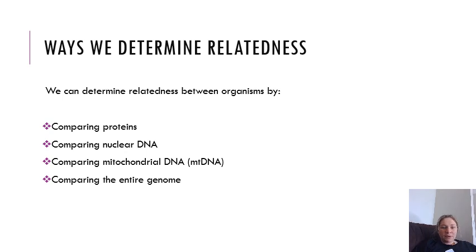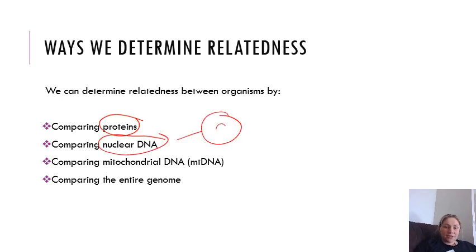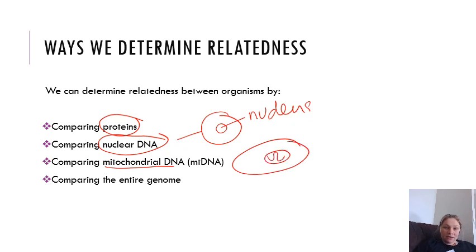There are a few ways that we can determine relatedness. We can compare proteins, we can compare nuclear DNA — DNA found inside the nucleus of our cells — we can compare mitochondrial DNA, which is DNA found inside our mitochondria, or we can compare the entire genome. A genome describes all of the genes present in an organism.